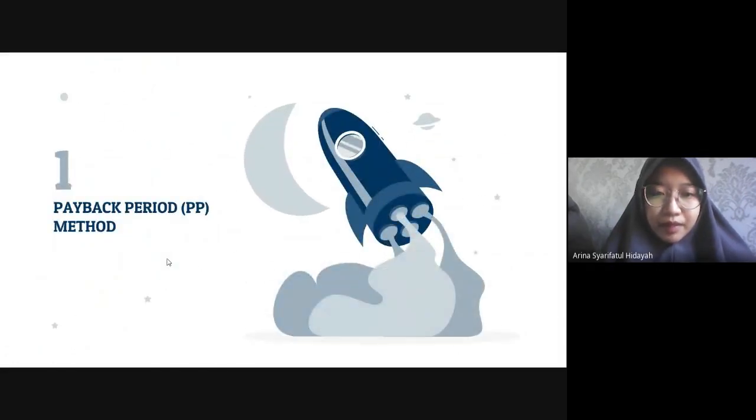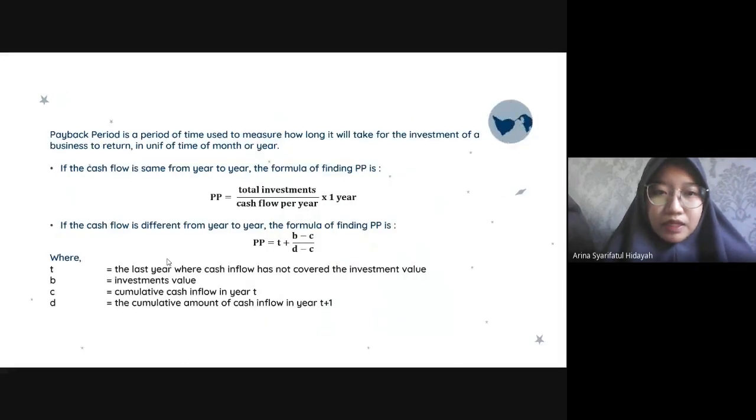The first is Payback Period or PP method. Payback Period is a period of time used to measure how long it will take for the investment of a business to return, in units of time of months or years. If the cash flow is the same from year to year, the formula of finding PP is: